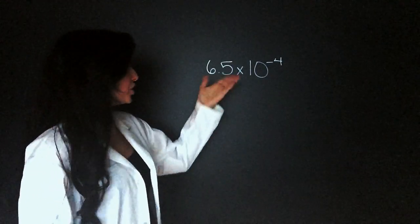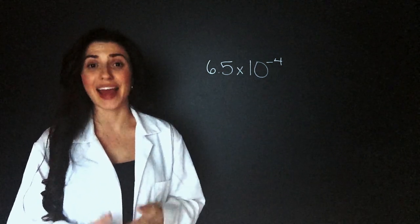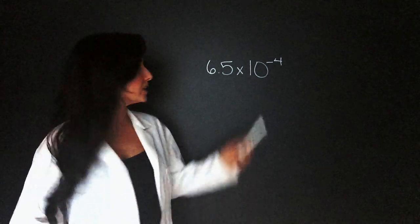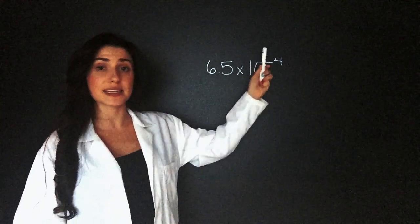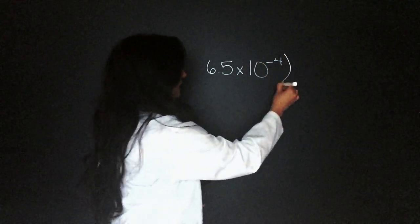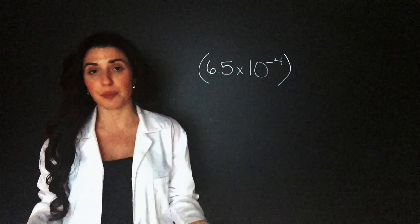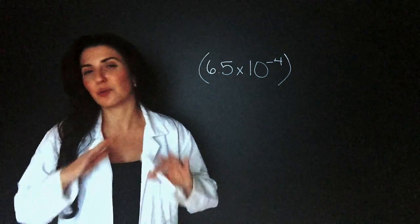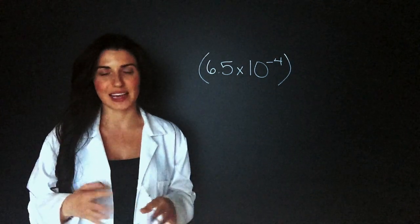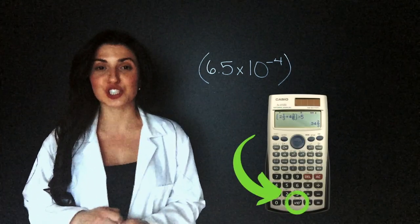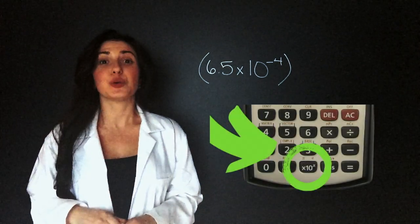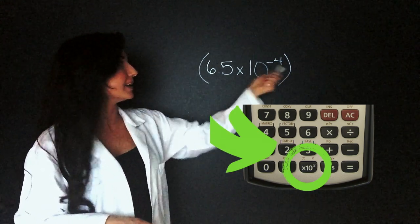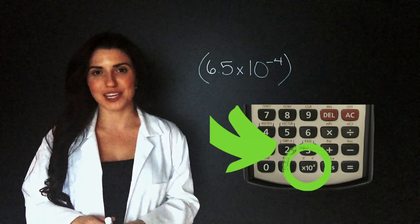Let's say you have 6.5 times 10 to the negative 4 and you need to punch it into a calculator. The first option is to type it in as 6.5 times 10 exponent negative 4, but you'll need to put brackets around it when multiplying by anything else. According to BEDMAS, if the rest of the equation is just adding, you won't need the brackets — but I would always use them just to be safe. If you have a scientific calculator with an exponent button, you can type 6.5e negative 4 and it knows it's a scientific notation number.